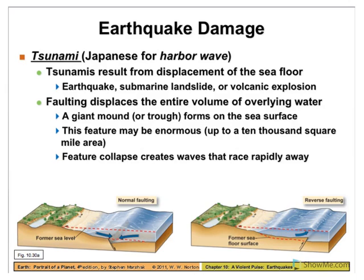Tsunamis are by far one of the biggest and most dangerous after effects from an earthquake, and as we've seen in the relatively recent past, they definitely affect a lot of people. What happens is essentially simple displacement. An earthquake occurs, a fault moves — one area moves down, the other block goes up — and that water is going to move with it.